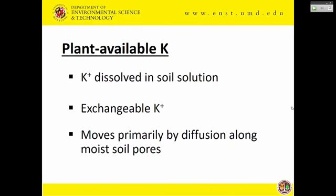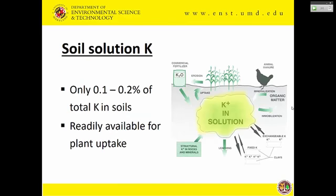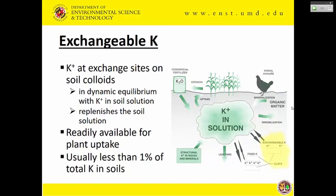When we talk about potassium availability to plants, potassium dissolved in soil solution is available to plants. There will also be exchangeable potassium that's available — it moves by diffusion just like phosphorus. The total potassium in soil solution is a tiny pool, but enough to provide what plants need. Another pool available to plants is exchangeable potassium — about one percent of the total — which can be exchanged back into the soil solution. When the soil solution is depleted, the exchangeable potassium will exchange into the soil solution so plants can take it up.